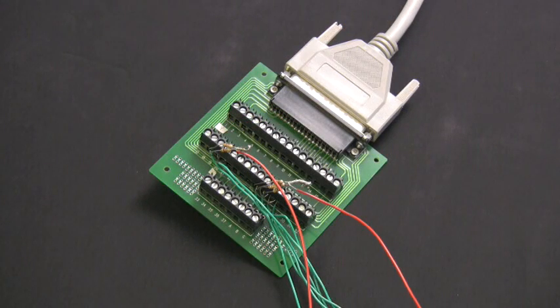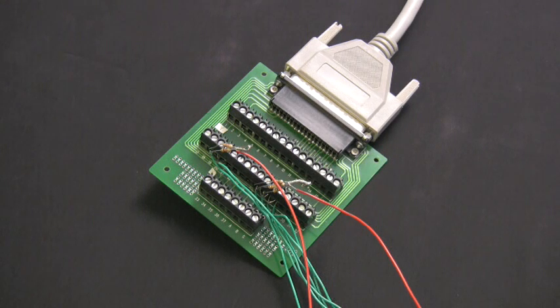Need a pull-up or a pull-down on an input? Other solutions require discrete external components with confusing clutter. Now with the ExpertIO, simply activate pull-ups and pull-downs through software, eliminate the confusion.